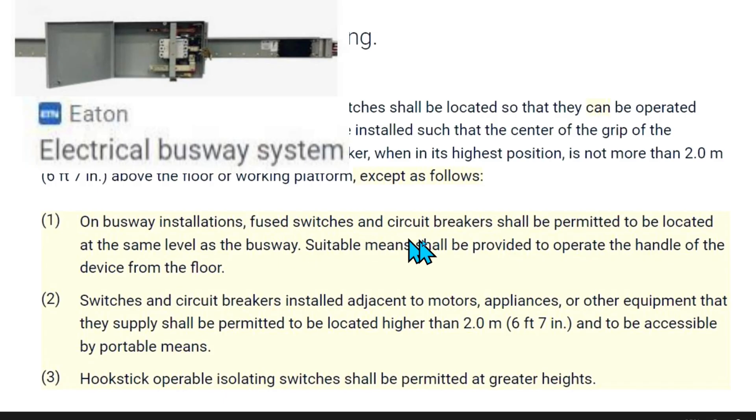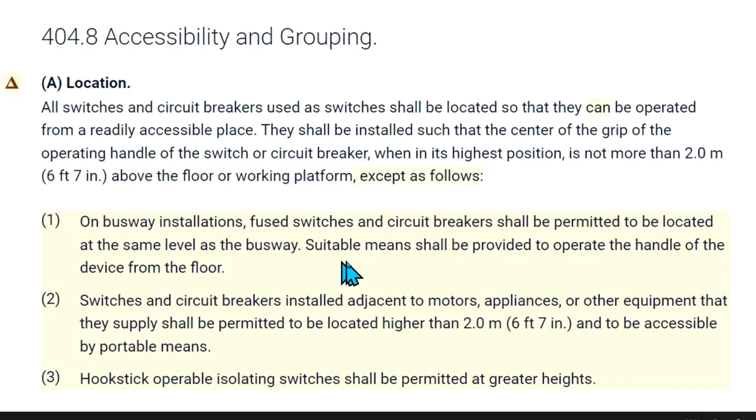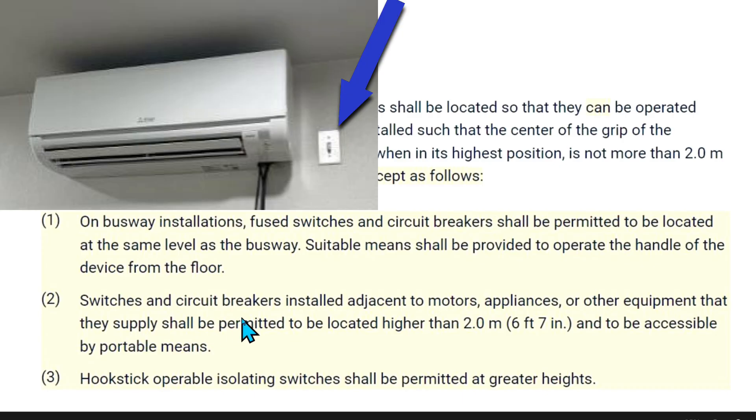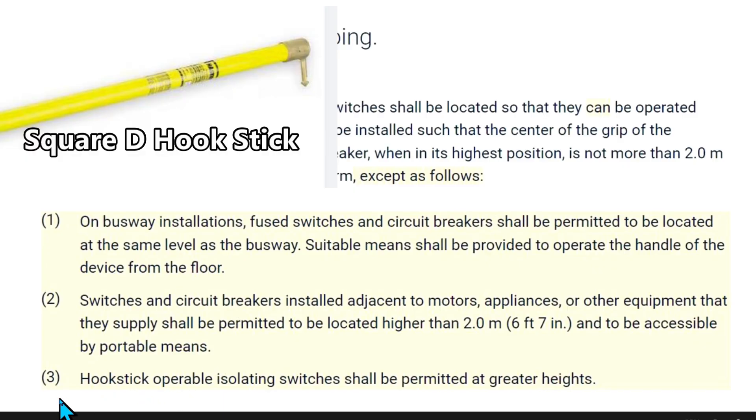You do have exceptions. One, on busway installations, fused switches and circuit breakers shall be permitted to be located at the same level as the busway. Suitable means shall be provided to operate the handle of the device from the floor. Two, switches and circuit breakers installed adjacent to motors, appliances, or other equipment that they supply shall be permitted to be located higher than 2 meters, that's 6 foot 7 inches, and to be accessible by portable means, that would be like a ladder.